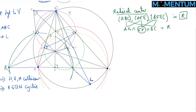So EF is the fourth line through R. We now know that AG, EF, HQ, and BC all meet at R — and this is the circle RGQN with diameter RN.